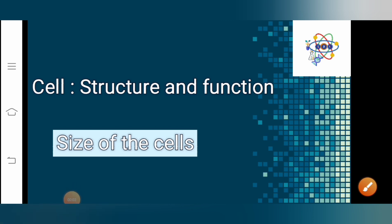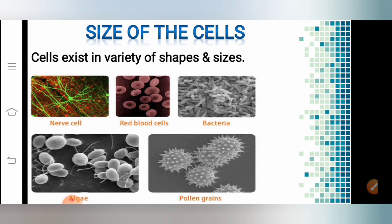Hello dear students, welcome to this session. In this session let us understand the size of the cells. In the previous session we understood the shape of the cells. We came to a conclusion that the shape of the cells depends on the functions they perform, because the shape of the cells varies from one region of the body to another — it is because they perform different functions. So now let us understand the size of the cells.